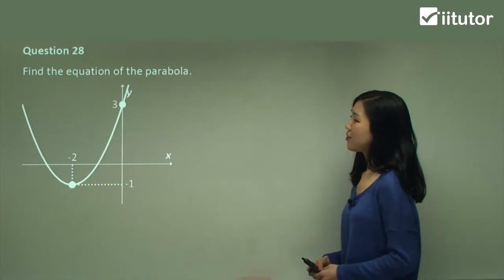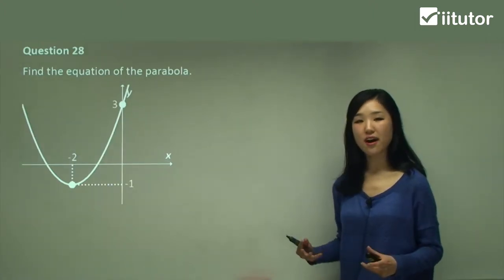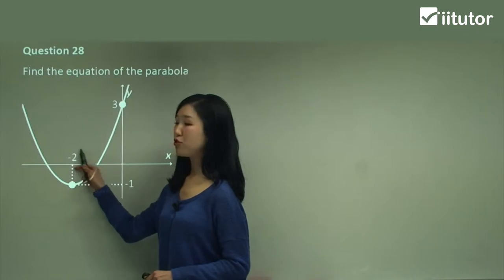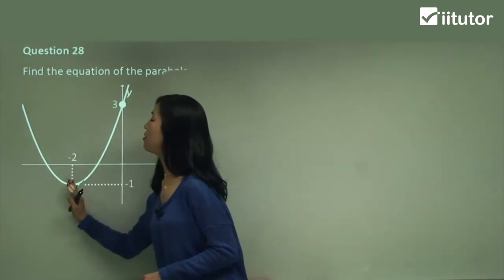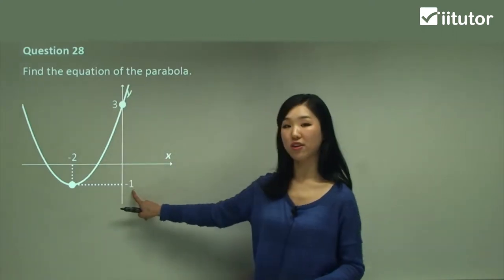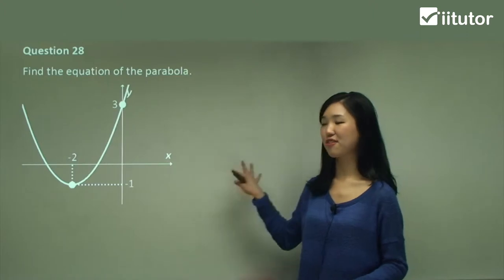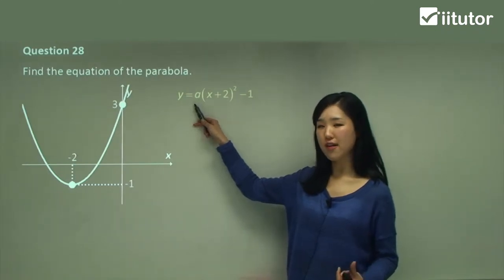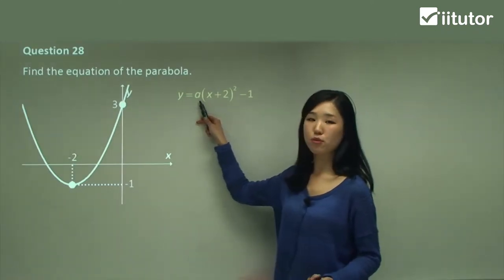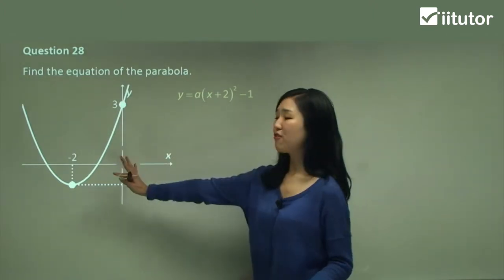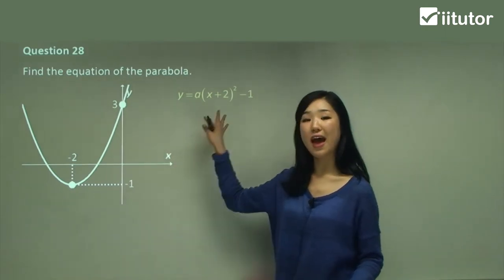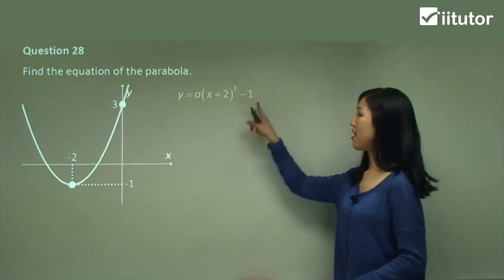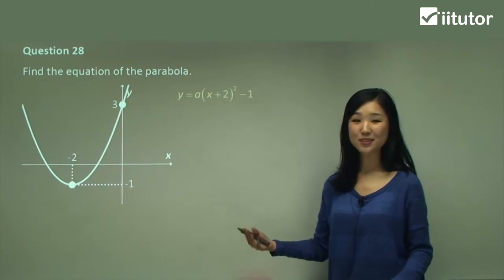Alright, so that's question 27. For question 28, first identify how it translates and transforms. This time it's shifted to the left by 2 units — that's why it's negative 2 here. And we've shifted it down by 1 unit. So the equation will look like this: we have our coefficient unknown, so leave it as a. Because it's shifted to the left by 2 units, remember when we shift to the left we add 2. So I added 2 to x and then squared it, and because we've shifted down by 1 unit, I subtract 1 from the whole equation.